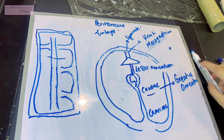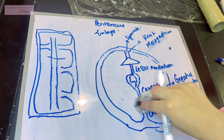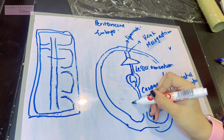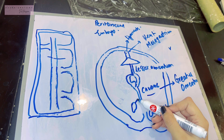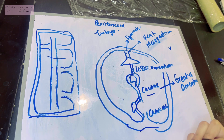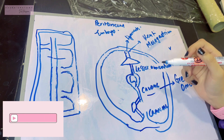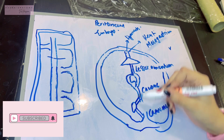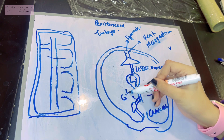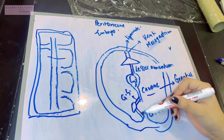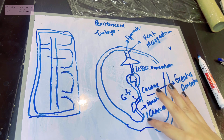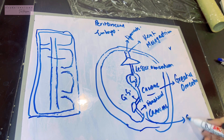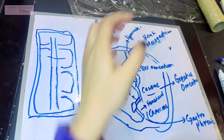In the cranial part of the dorsal mesogastrium, two things happen. First, the spleen starts to develop, dividing the cranial part into a ventral and a dorsal portion. The ventral part becomes the gastrosplenic ligament, connecting the stomach to the spleen. The dorsal part forms the lienorenal ligament. Finally, the cranial-most part of the dorsal mesogastrium will become the gastrophrenic ligament, connecting the stomach to the diaphragm.